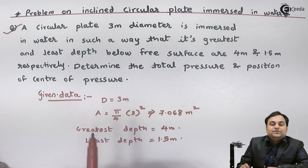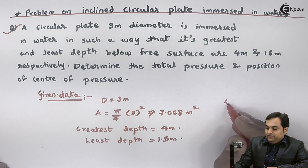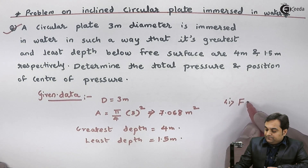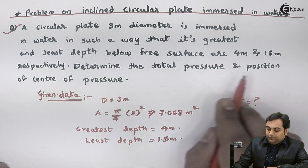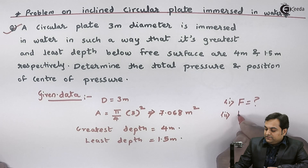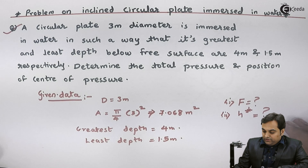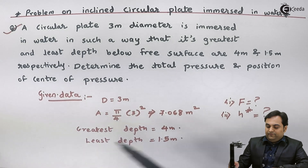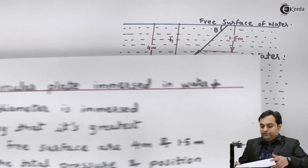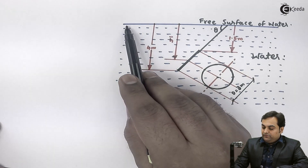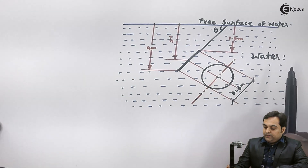Whenever they say total pressure it means hydrostatic force, and position of center of pressure means location of hydrostatic force, that is H star. With this data available, let us try to get the solution. I have already drawn the diagram which I will explain.